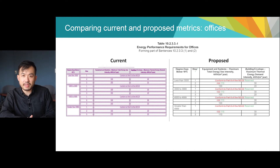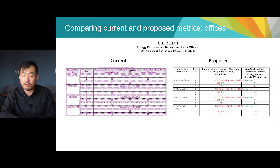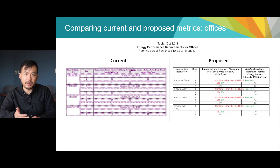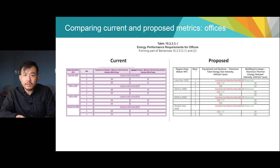Since the Part 3 proposal is largely similar to the existing Energy Step Code targets, let's focus on the two proposed changes, which involve slightly stricter energy efficiency metrics for office and retail occupancies. Total energy use intensity, or TEUI, as well as thermal energy demand intensity, or TEDI, are expressed in kilowatt hours per meter squared per year. On the left in purple are the current Energy Step Code metrics for offices, and on the right are the proposed changes. In climate zones 4 through 6 — areas with heating degree days at or below 4,999 — the TEUI targets are set to 110 instead of 130. In climate zones 7A through 8, areas with heating degree days greater than 4,999, the TEUI targets are set at 115 instead of 130. TEDI targets remain the same.